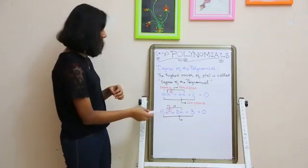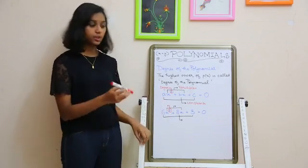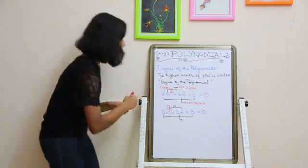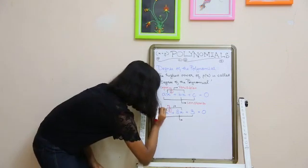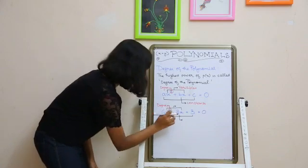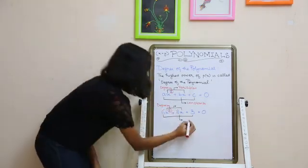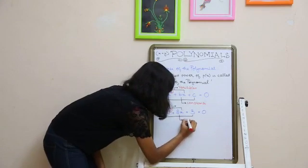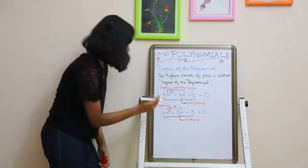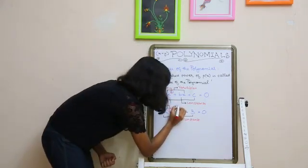For example, if we take 6x² + 8x + 3 = 0, the highest power will be 2. So 2 will be the degree of the polynomial. The values 6, 8, and 3 will be the constants, and x will be the variable in the equation.